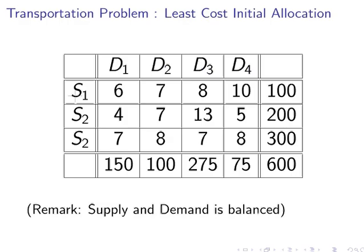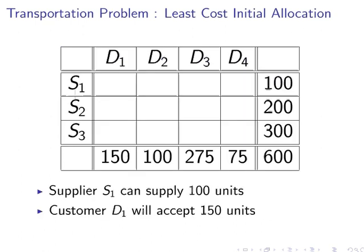The row totals and column totals indicate the amount that each customer will accept and how much each supplier can supply. Let's look at that in a bit more detail here. Supplier S1 can supply 100 units.